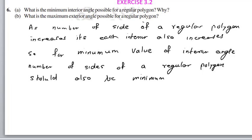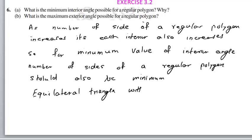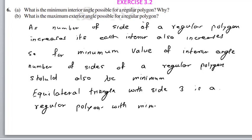If you want the minimum interior angle, the regular polygon must have the minimum number of sides. The equilateral triangle is a regular polygon with minimum number of sides — which is 3.